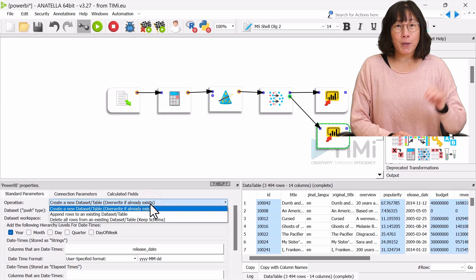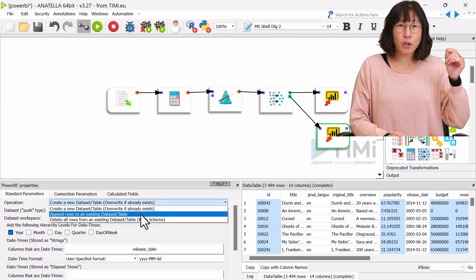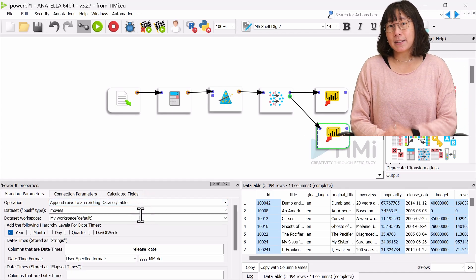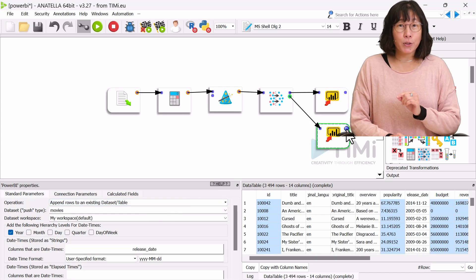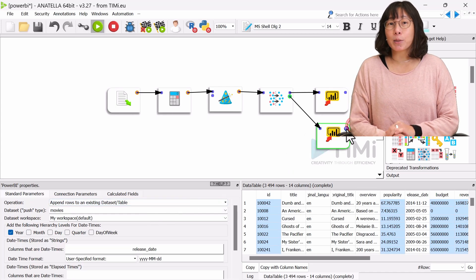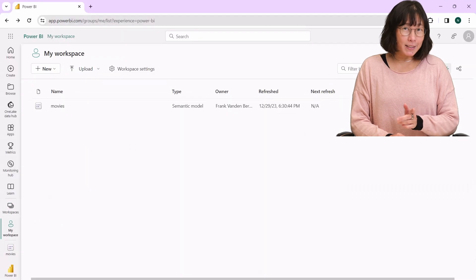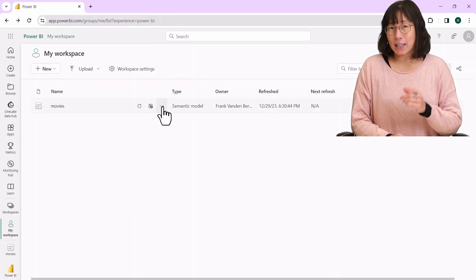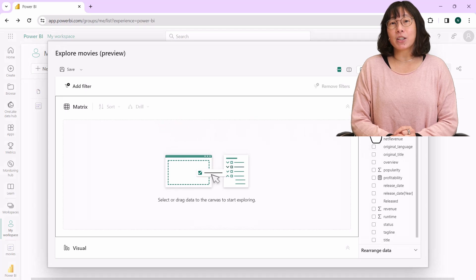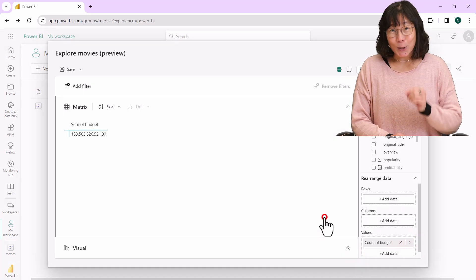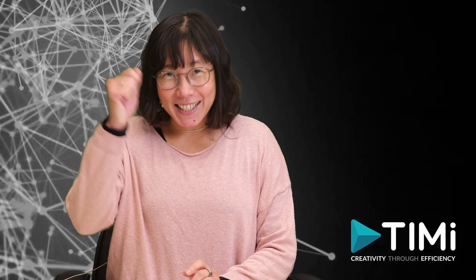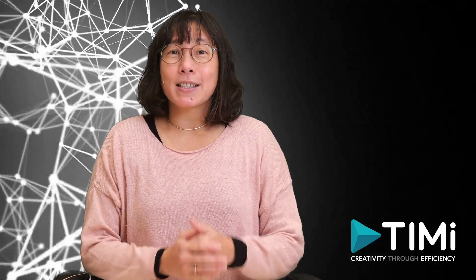Modify the Power BI box operation to append rows to an existing dataset. Run the box and then let's check the Power BI in Azure. Refresh the data. The count is now 4,803. This includes the appended rows. Yes! That's a successful upload and append demonstration.